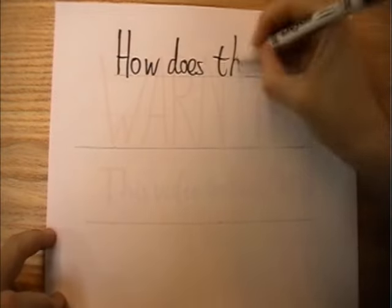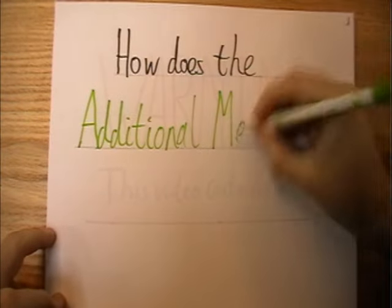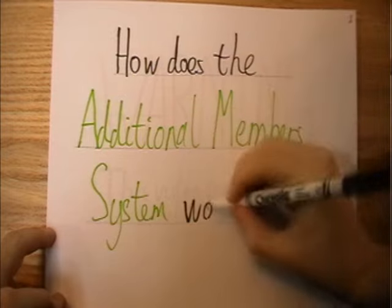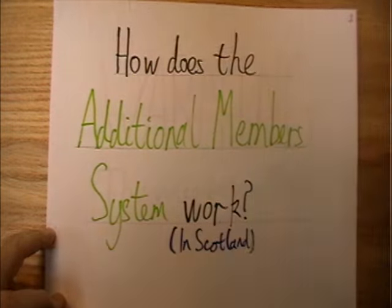So now that you know how to vote — hint hint, go watch my other videos — let's talk about how these votes are counted and the electoral system used for the Scottish Parliament elections.